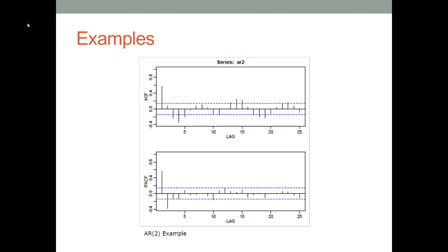Let's see some examples. These two charts are examples of an ACF chart and a PACF chart. Notice that there are two horizontal blue dashed lines in each chart — they represent the significant thresholds. In each chart, we also have several vertical lines representing the ACF and PACF values on each time spot. Only the vertical lines that exceed the horizontal dashed lines are considered significant. In this case, we have several significant ACF values and two significant PACF values.